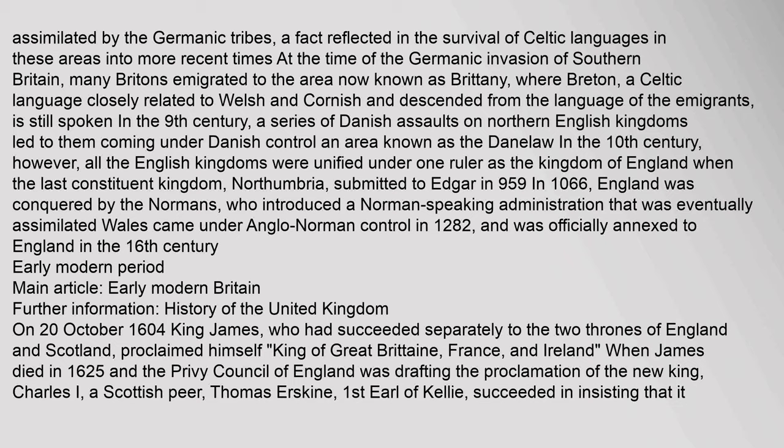Early Modern Period: On 20 October 1604, King James — who had succeeded separately to the two thrones of England and Scotland — proclaimed himself King of Great Britain, France and Ireland. When James died in 1625 and the Privy Council of England was drafting the proclamation of the new king, Charles I, a Scottish peer, Thomas Erskine, 1st Earl of Kelly, succeeded in insisting that it use the phrase 'King of Great Britain,' which James had preferred.